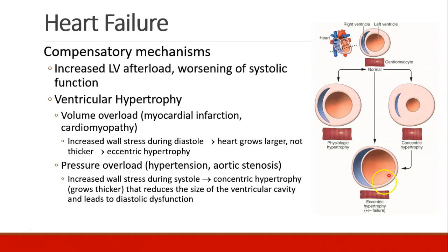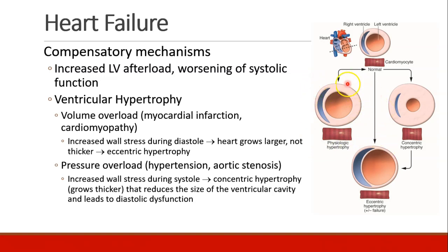Patients can also respond to pressure overload in the case of hypertension or aortic stenosis, leading to increased wall stress during systole and what we call concentric hypertrophy — the heart wall grows thicker, but this reduces the size of the ventricular cavity and can lead to diastolic dysfunction because the heart is unable to relax with this bulky, thick cavity. Physiologic hypertrophy — the athletic heart — is when the heart muscle has gotten a little thicker and the heart a little bigger in healthy ways that improve efficiency and pumping.